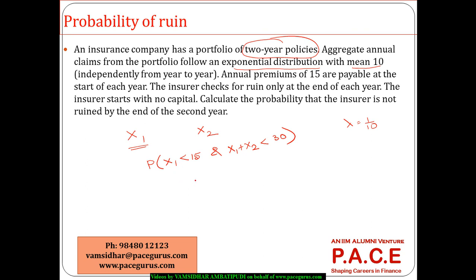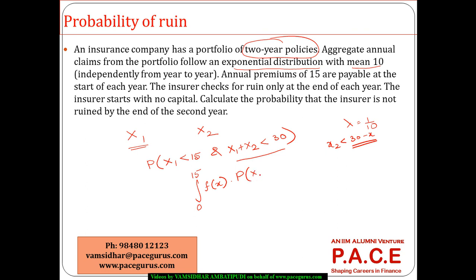Now we will integrate this. The premiums give us 15 per year, so I need to set up the integral. Probability of X1 less than 15 is integrated from 0 to 15 as f(x)dx. For X1 plus X2 less than 30, this means X2 is less than 30 minus X. So we need the probability that X2 is less than 30 minus X, integrated over X.